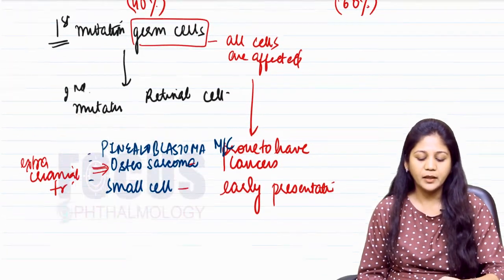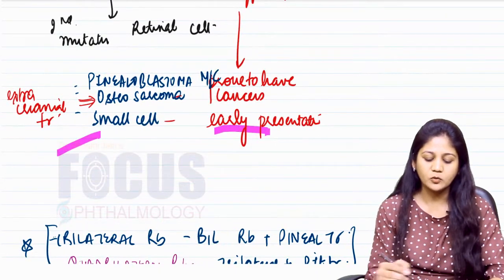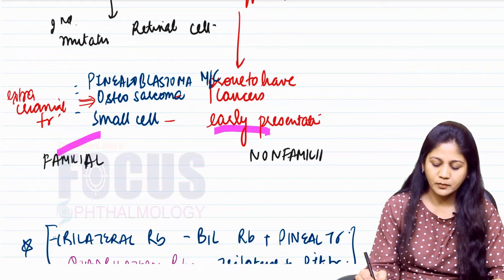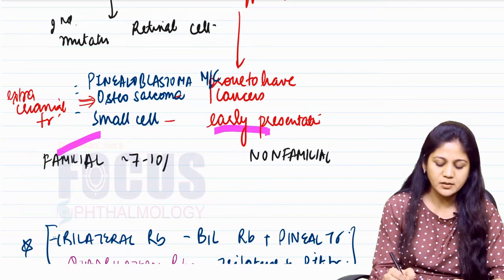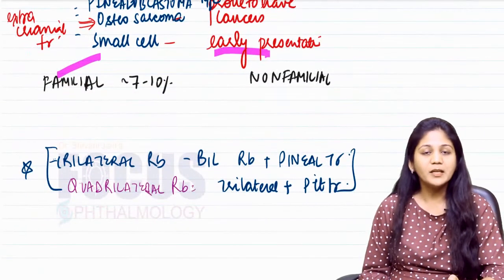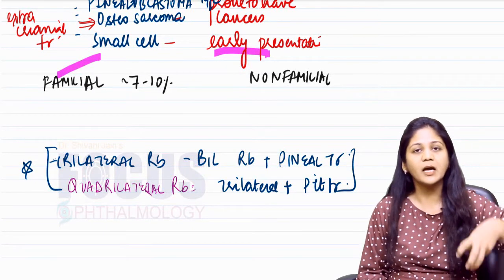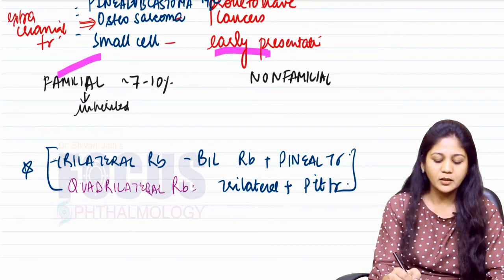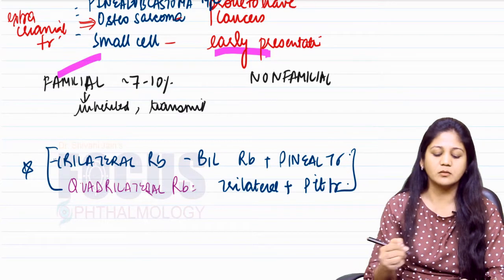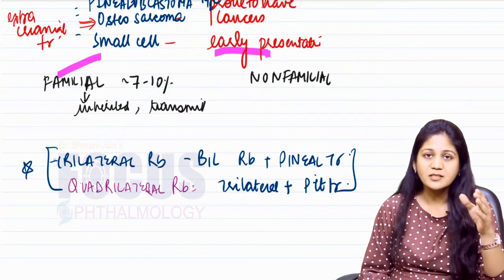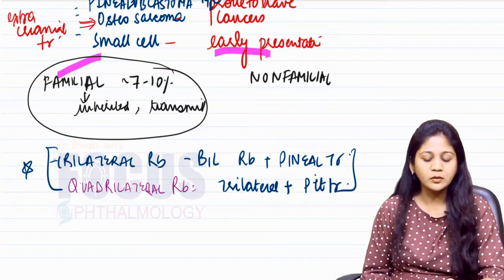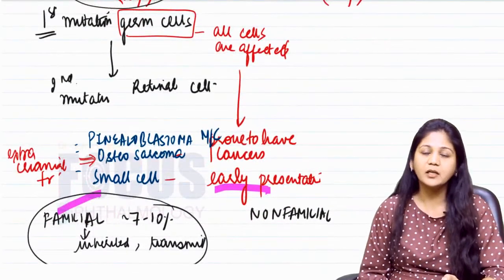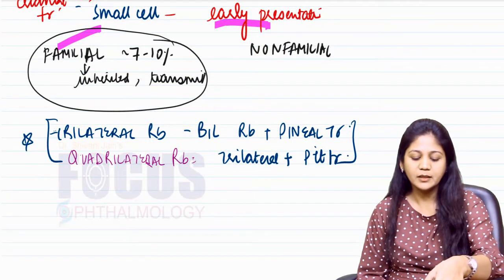Hereditary tumors can be further divided into familial or non-familial tumors. Familial tumors are very few — just seven to ten percent — and the rest are non-familial. Familial means they are inherited from parents and will be transmitted to offspring. Don't confuse familial with hereditary: hereditary accounts for almost 40 percent, whereas familial is only seven to ten percent.